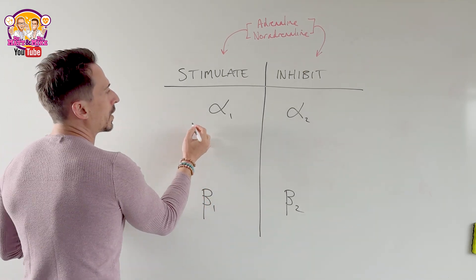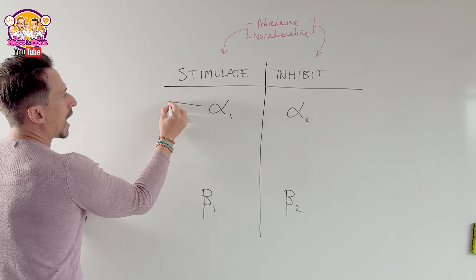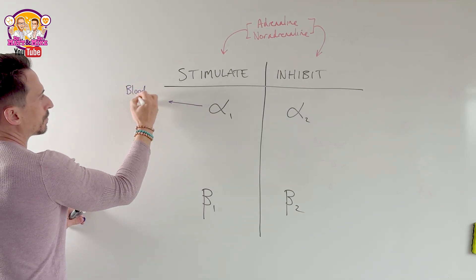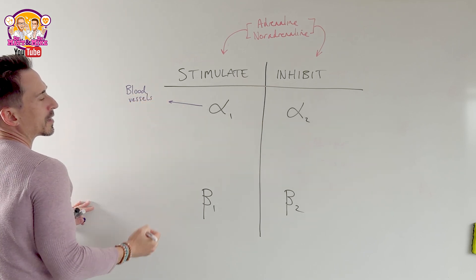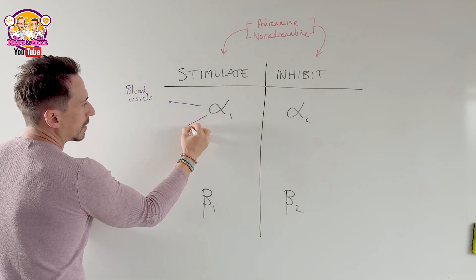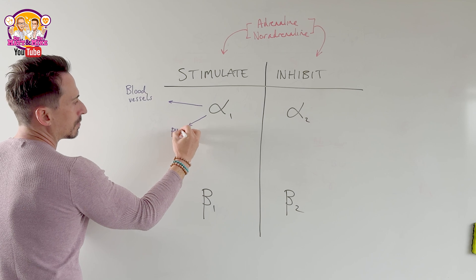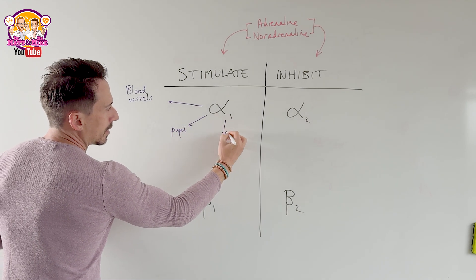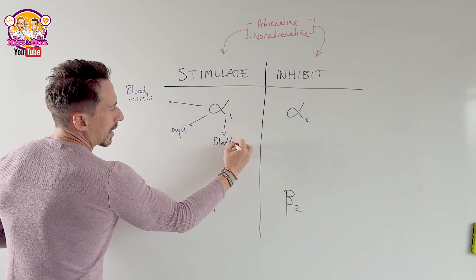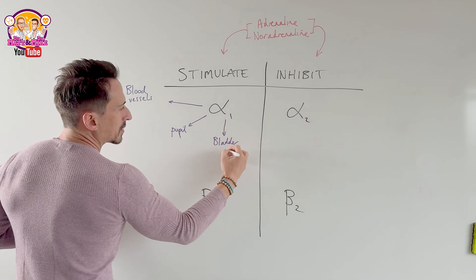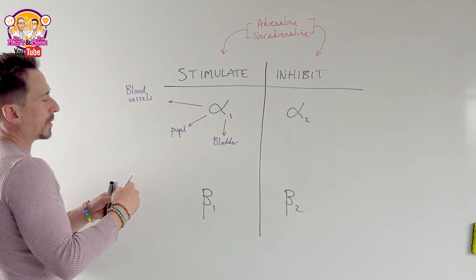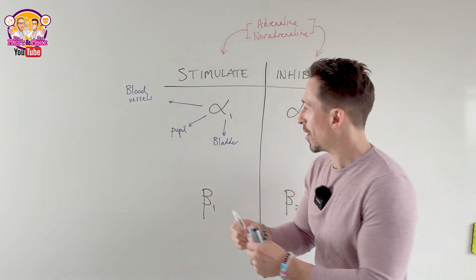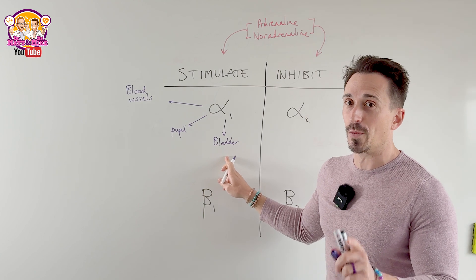Let's look at alpha-1. Alpha-1 receptors are located importantly on blood vessels, also at the pupil of the eye, and also at the bladder — specifically the sphincter of the bladder. All of these structures have muscles associated with them, and that's what's important for alpha-1.